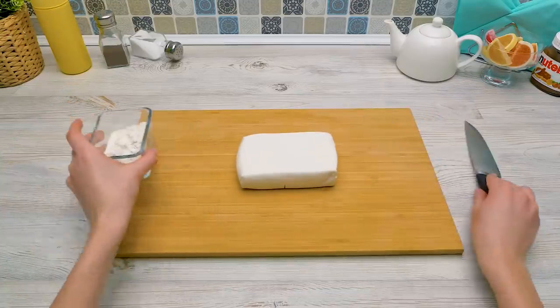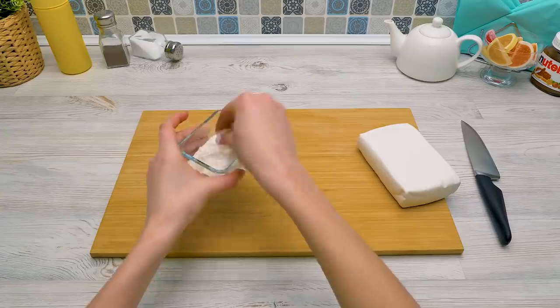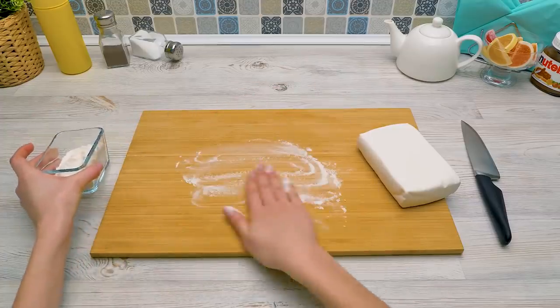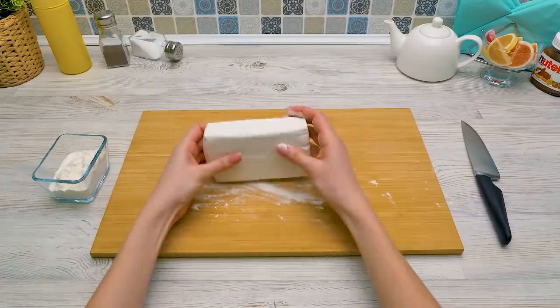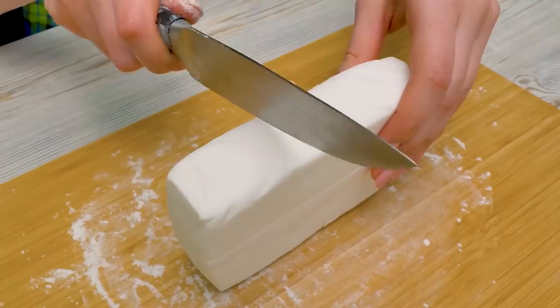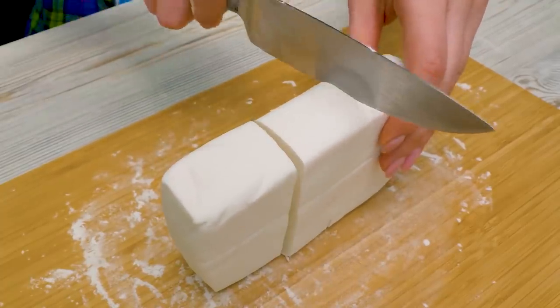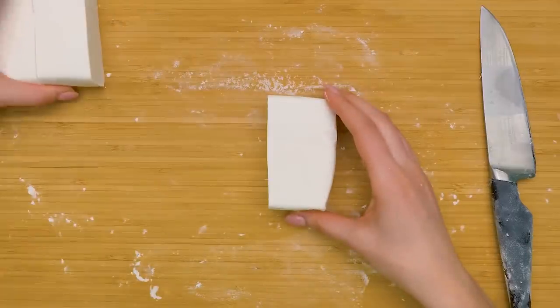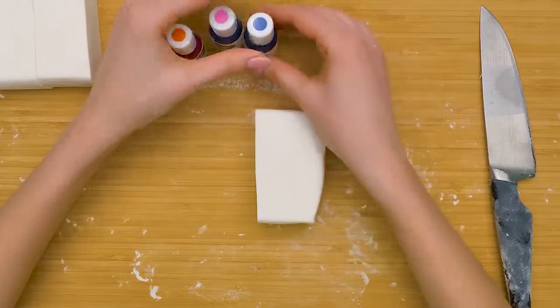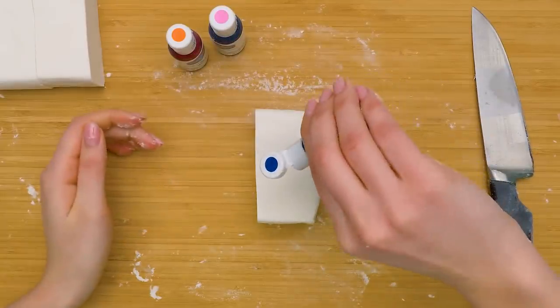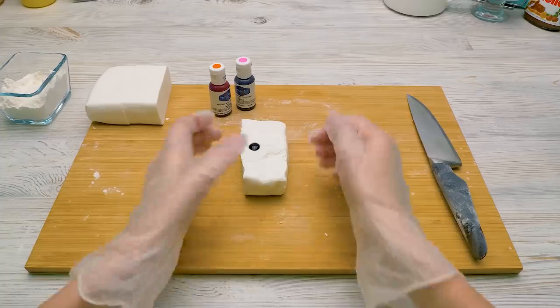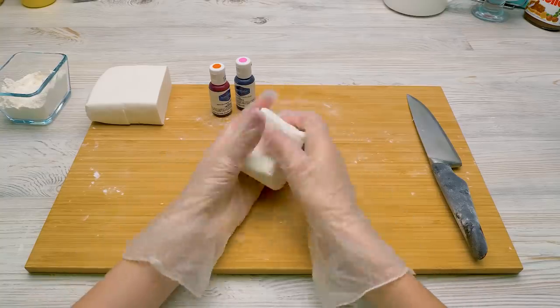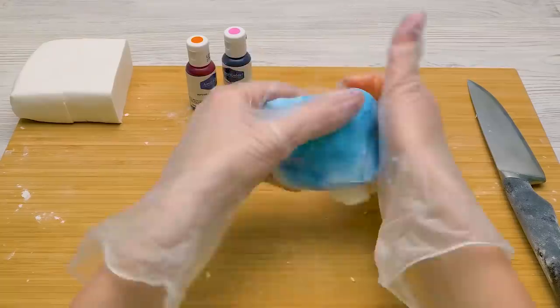Now we're going to make the most summery phone case. First, we'll need a cutting board and some flour. As well as some fondant. Let's cut this fondant piece into three smaller pieces. Like this. And dye it with the help of food coloring. We'll use blue, pink, and yellow. Oh, don't forget to wear gloves when you mix the coloring in. Otherwise, you'll just stain your hands.